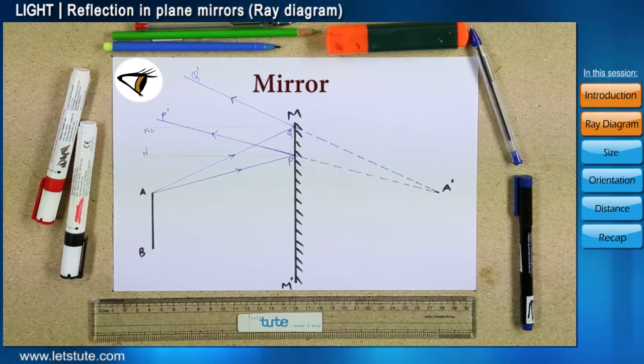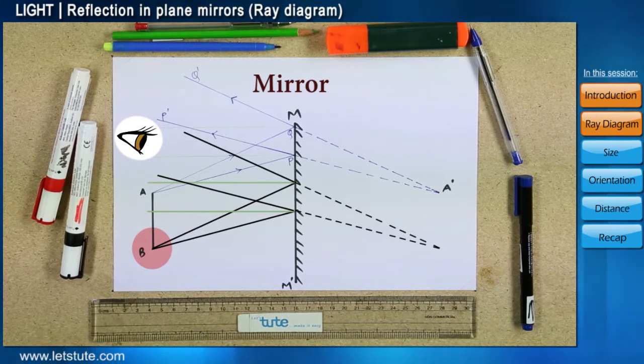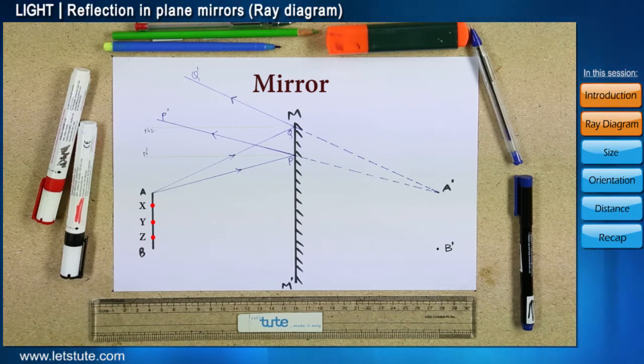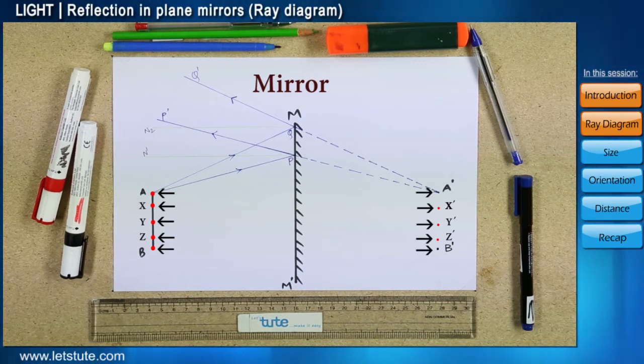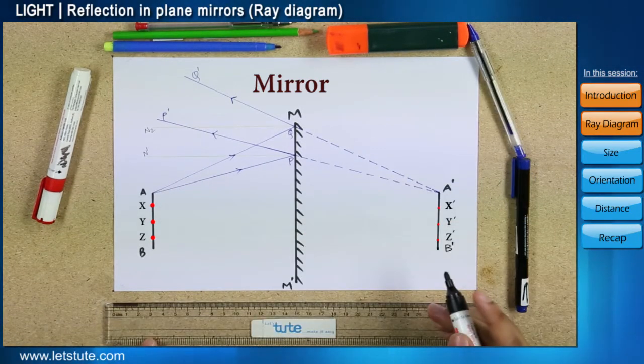This entire process can be repeated for another point B on the object AB. So, in this case, the image or point image formed will be B dash. In this way, other points on object AB like say X, Y and Z and so on can be considered, leading to formation of images X dash, Y dash, Z dash respectively. As each point of any object forms a point image in the mirror, it is understood that if all points are considered together, the image or what we call reflection of the whole object is seen in the mirror.